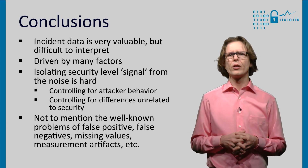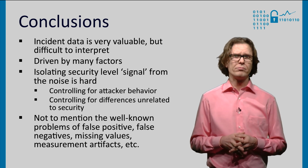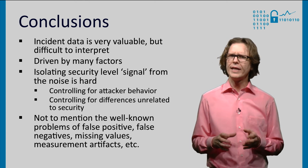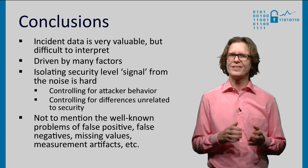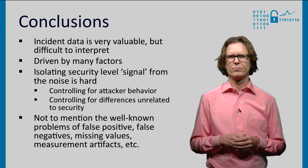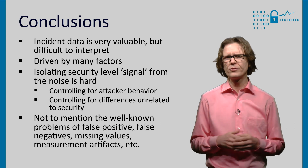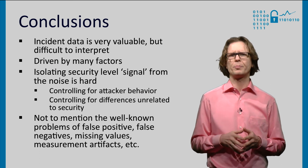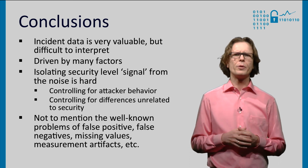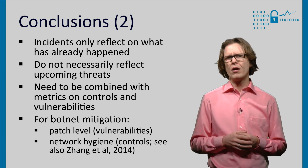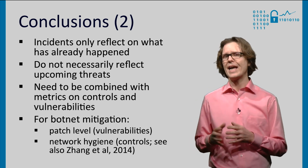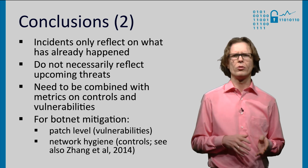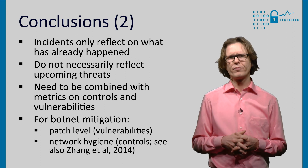This brings us to the conclusion. What can we learn from this extended example? Incident data is very valuable, but it's also very difficult to interpret. It's driven by many factors, and it's hard to isolate the security level from those factors — to isolate the signal from the noise, so to speak. It requires you to control for attacker behavior and for differences unrelated to security. This is hard enough, and we haven't even talked about all of the standard problems of collecting and analyzing empirical data. Don't get discouraged, though — it's often worth doing, if only because incident metrics add a unique perspective on the security level that you're trying to manage. It's also important to understand the limitations: incident metrics are, by definition, based on past events. They express what has already happened and do not necessarily tell you about what is to come. This is why we also need the other types of metrics in the framework — those for controls and vulnerabilities.